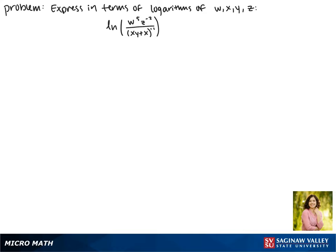Today we'll be expressing the natural log of w to the fifth times z to the negative second, all over xy plus x to the negative first power, in terms of logarithms of w, x, y, and z.